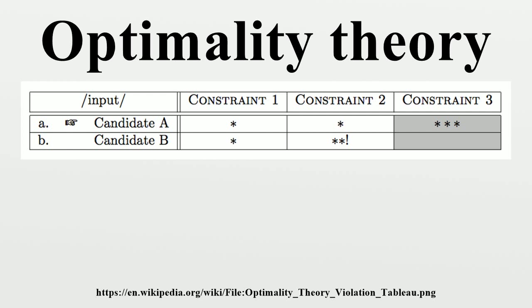There are three basic components of the theory. Gen takes an input and generates the list of possible outputs, or candidates. CON provides the criteria, in the form of strictly ordered viable constraints, used to decide between candidates. EVAL chooses the optimal candidate based on the constraints, and this candidate is the output. Optimality theory assumes that these components are universal. Differences in grammars reflect different rankings of the universal constraint set, and part of language acquisition can be described as the process of adjusting the ranking of these constraints.